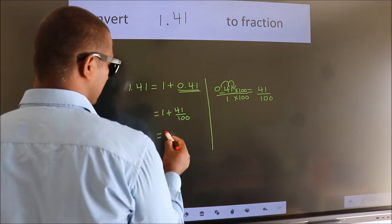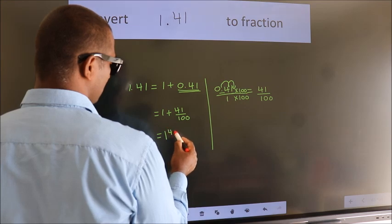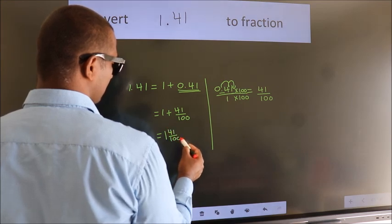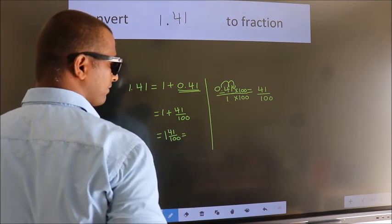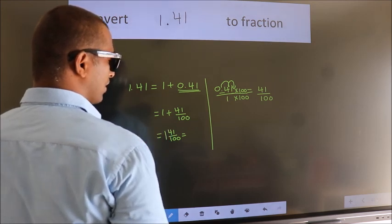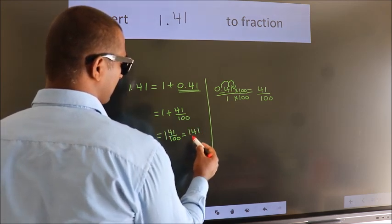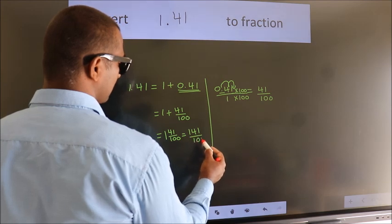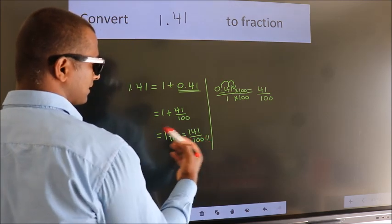In mixed fraction, it is 1 and 41/100. In improper fraction, it is 1 times 100 plus 41 over 100, which equals 141/100. This is our fraction.